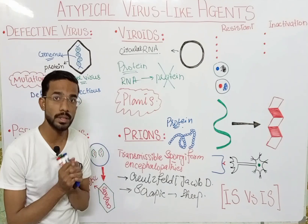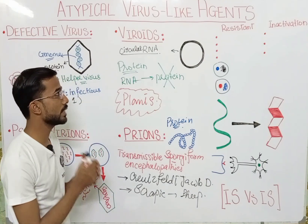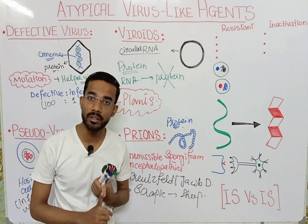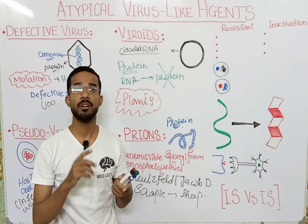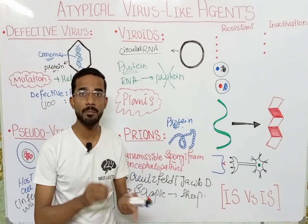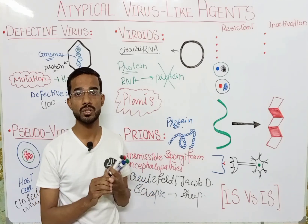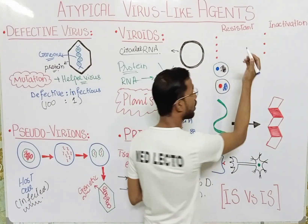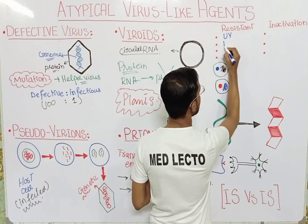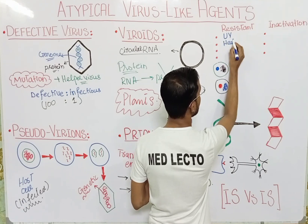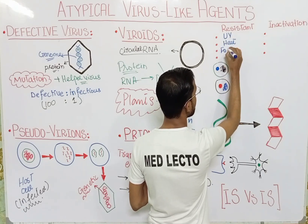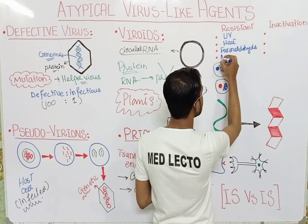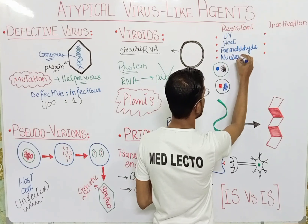Prions, which are protein in nature, are actually resistant to different things. They are resistant to ultraviolet light, heat, nucleases, formaldehyde, and other nucleases.